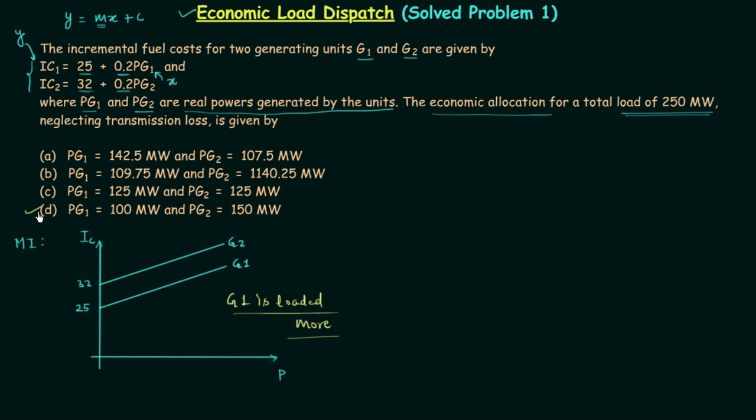If you see option D, you will find PG1 is less than PG2. So G1 is loaded less than G2, which is not true from here you can see. So option D is not the correct option. In option C, PG1 is equal to 125 MW and PG2 is also equal to 125 MW. This means both the generators are loaded equally, which is also not true. So option C is also incorrect.